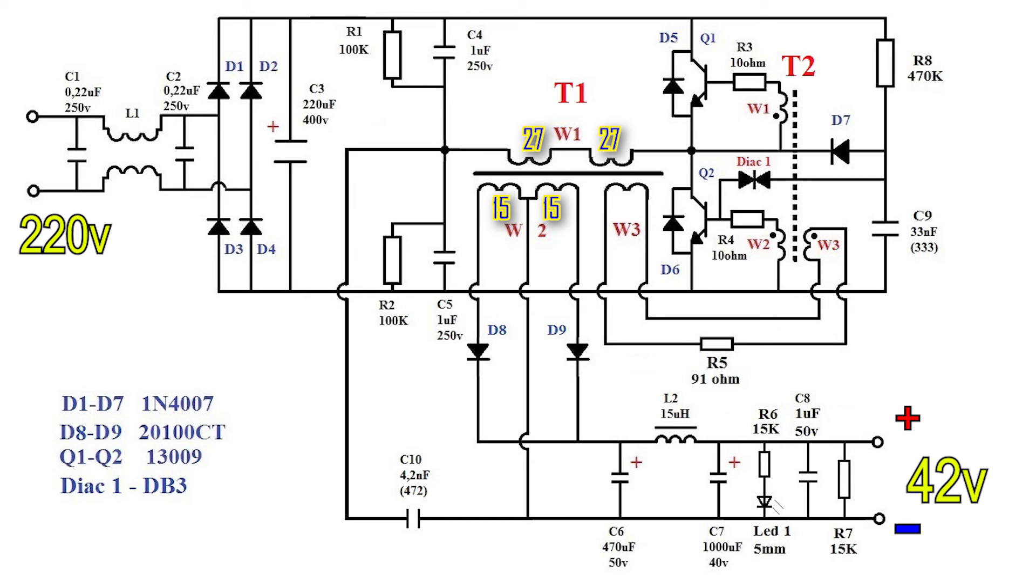Another secondary winding W3 has six turns. From it, voltage also goes to W3, but this is already the primary winding of transformer T2.